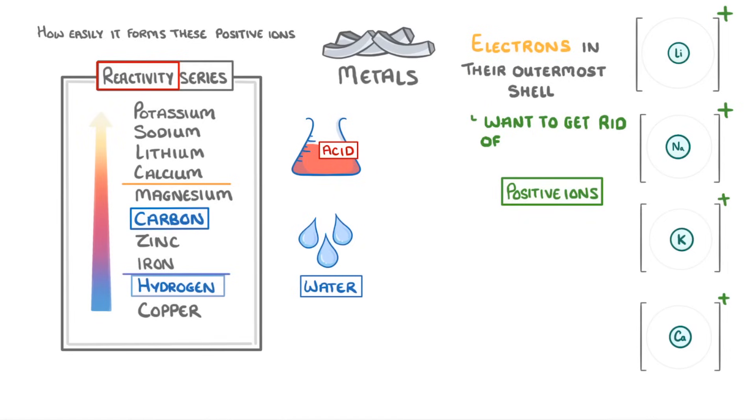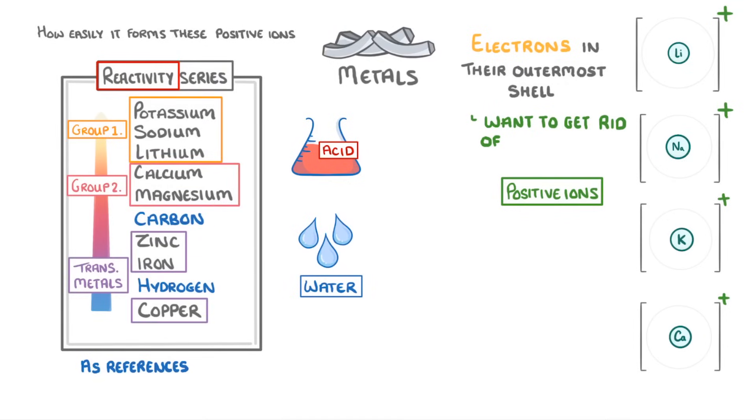Now even though carbon and hydrogen aren't metals, we often still include them in reactivity series as references to compare the metals against. The most reactive metals are the group 1 metals, with the group 2 metals being a bit less reactive, and the transition metals generally the least reactive.